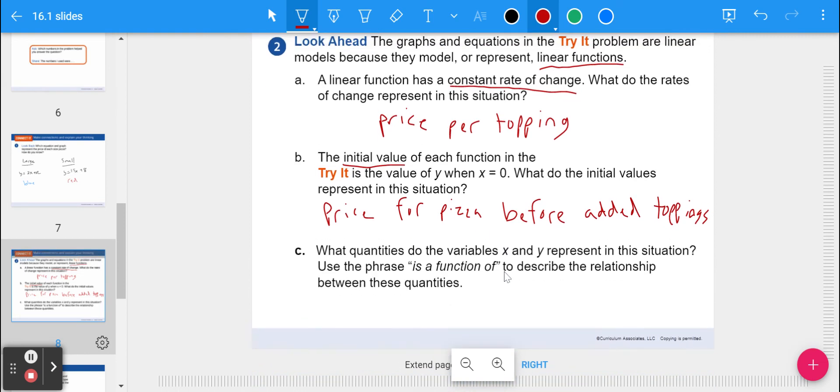Last question: what quantities do the variables X and Y represent? X was the number of toppings and Y was our total cost. Use the phrase 'is a function of' to describe the relationship between these two quantities.